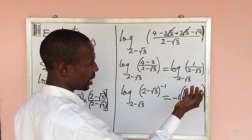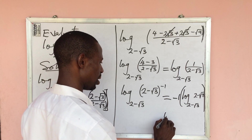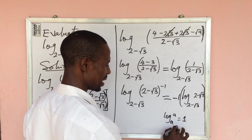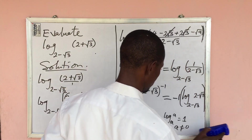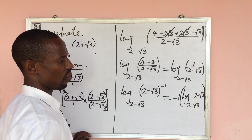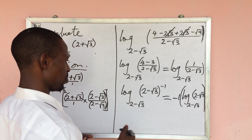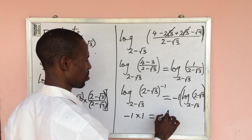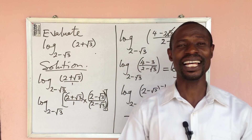Finally, we apply the same-base law of logarithms, which says that log(a) base a = 1, provided a is not equal to zero. So log(2 − √3) base (2 − √3) = 1, and our final answer is −1 × 1 = −1. As simple as ABC!